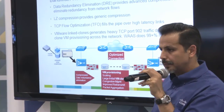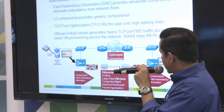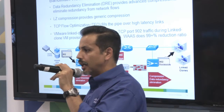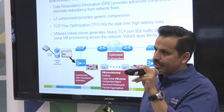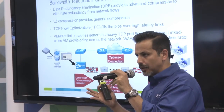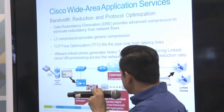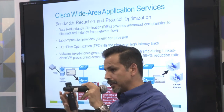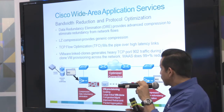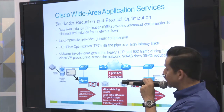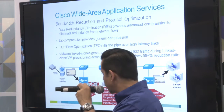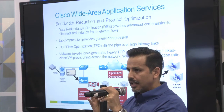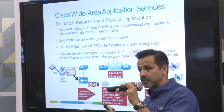Cisco Wide Area Application Services (WAAS) helps when creating VMs across the WAN. Link clones use heavy data to create those links — in a data center you have 10-gig pipes so it's no problem, but across a WAN you'll have latency and bandwidth issues. With WAAS, we can achieve up to 99% reduction ratio of that traffic, significantly reducing the bandwidth needed to create those link clones at the branch and making the process efficient.